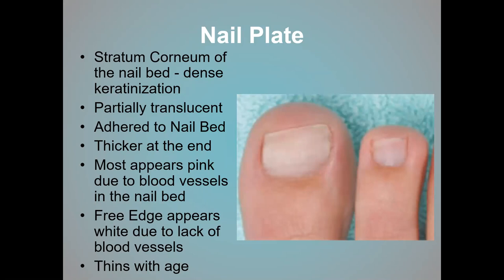The nail plate consists of the stratum corneum from the nail bed beneath it and has dense keratinization, forming the hard surface we know as the nail plate. You can see through a normal, clean, fresh nail plate, and it looks pink underneath because the nail bed is very vascular. When the nail plate is of normal color, you can see that pinkness beneath it.